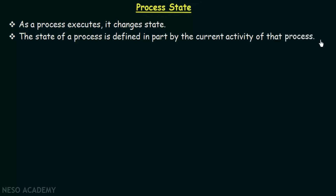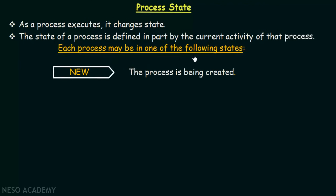Now let us see what are the states that a process can be in. Each process may be in one of the following states. First of all we have the new state. If a process is in the new state it means the process is being created — when the program is going to be in execution and the process is being created for performing a particular task, we say that the process is in the new state.